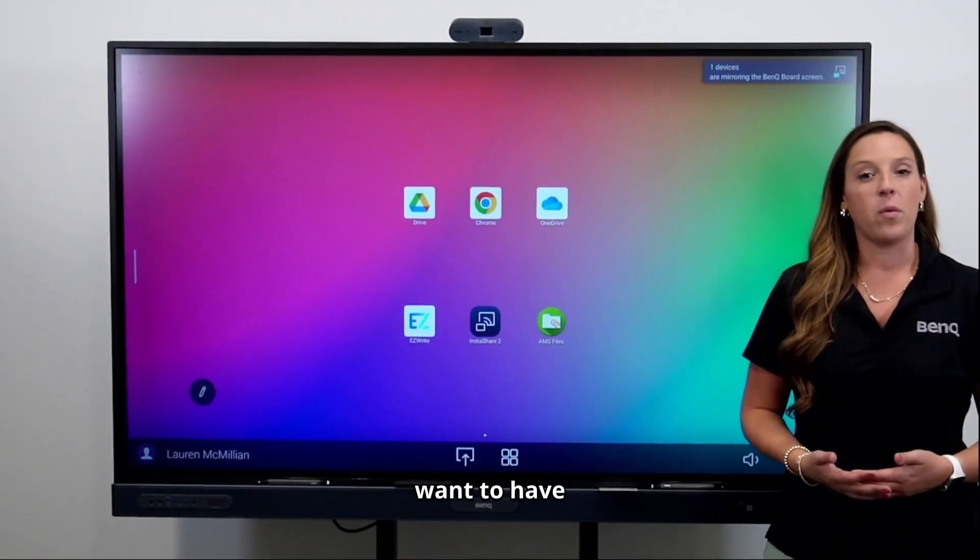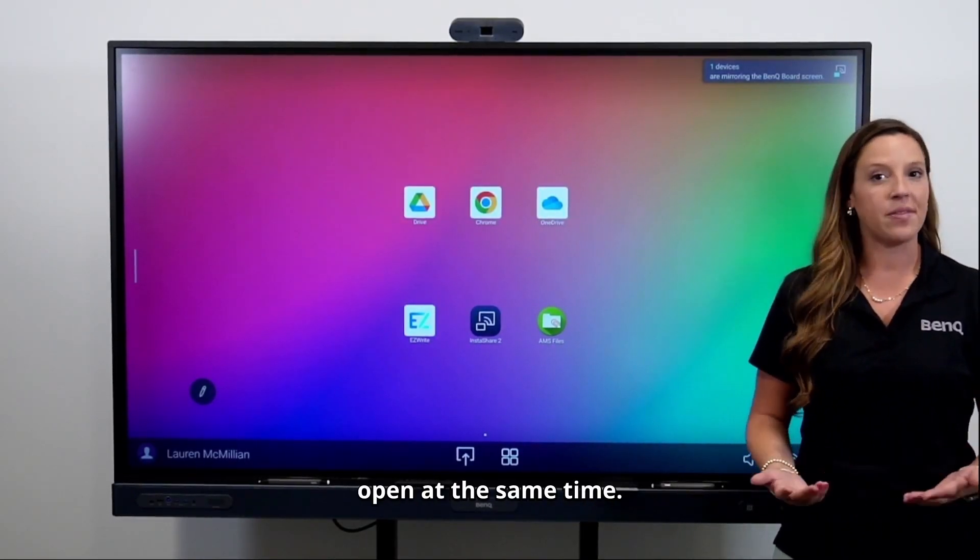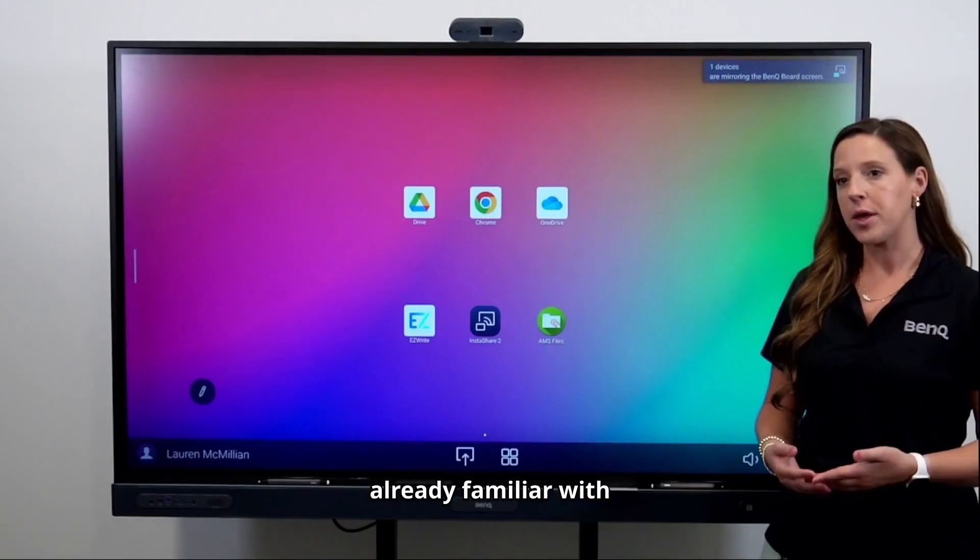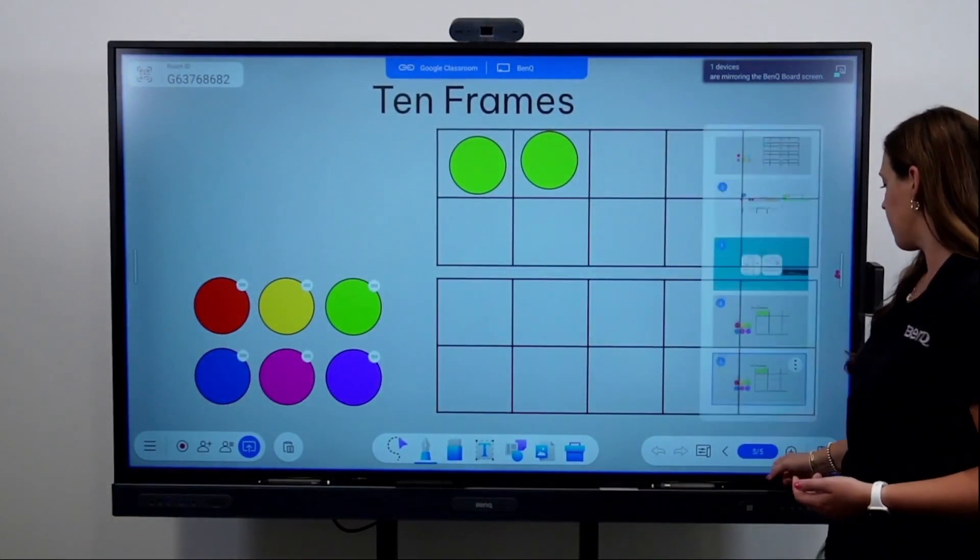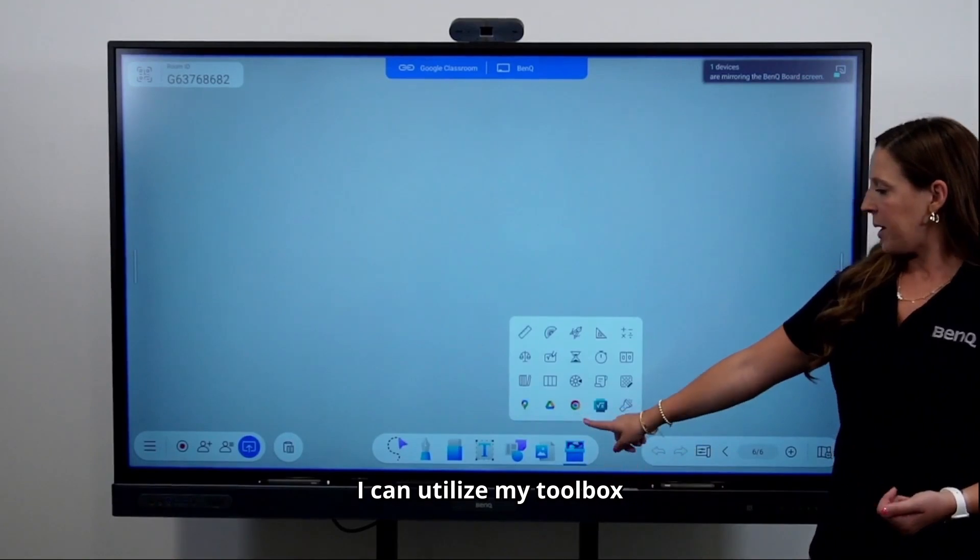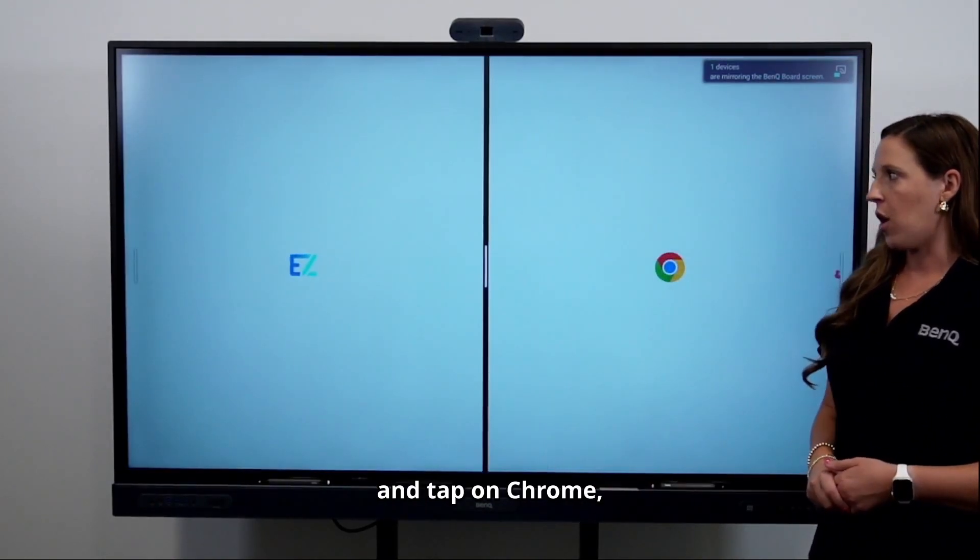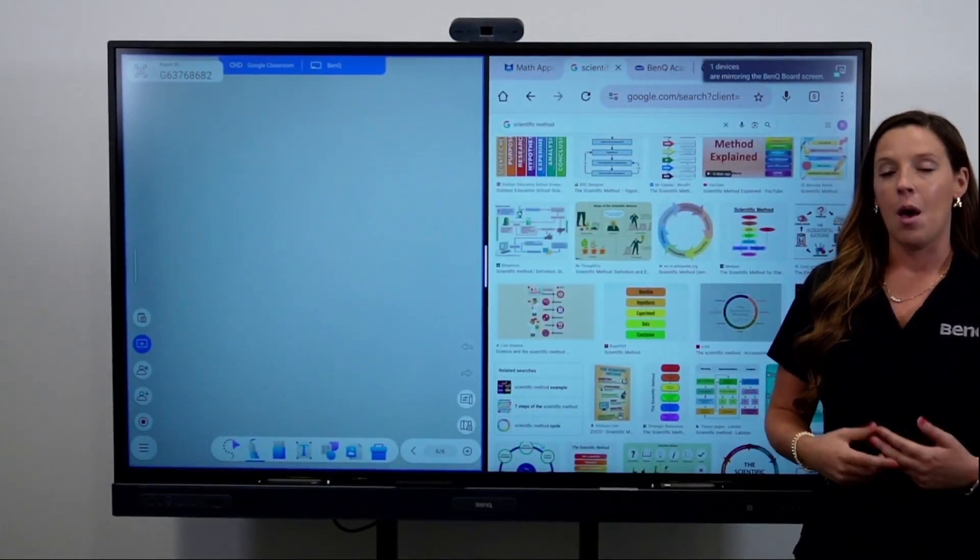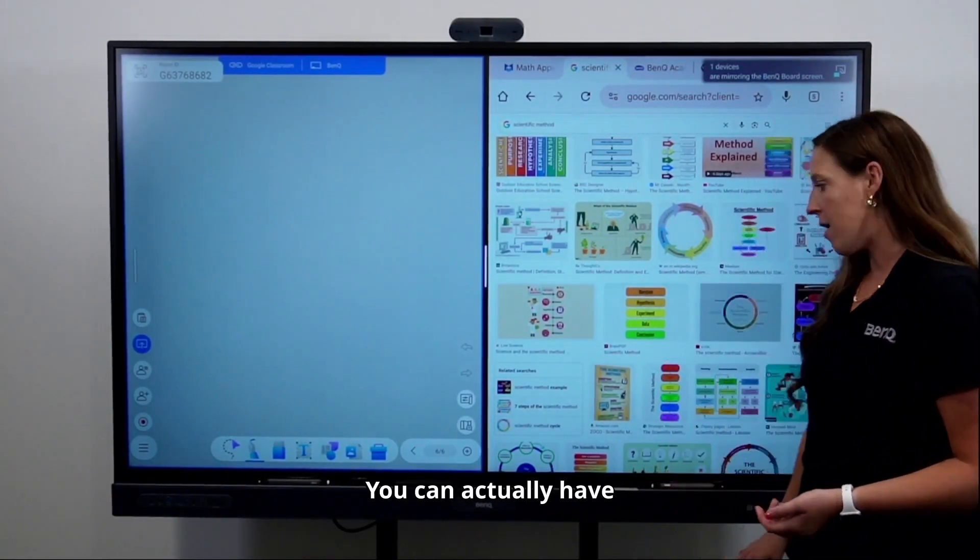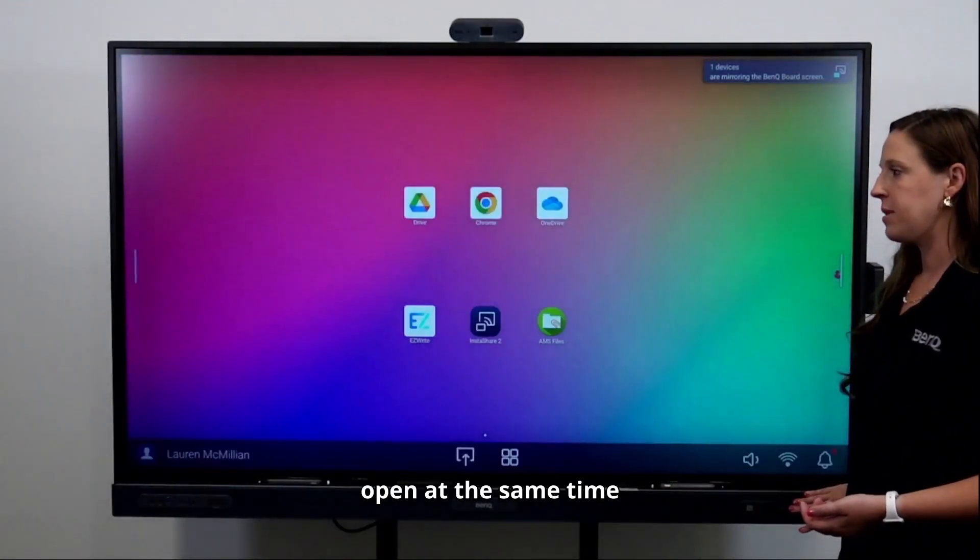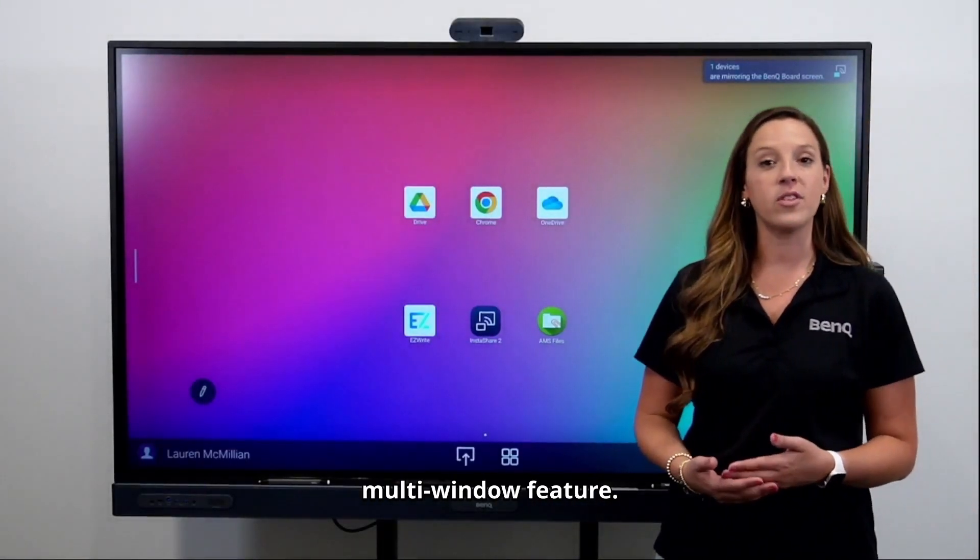Sometimes you might want to have multiple resources and multiple apps open at the same time. One thing you're probably already familiar with is the fact that you can easily split your screen when you're in EasyWrite. I can utilize my toolbox and tap on Chrome and it's going to auto split my screen. But maybe you want to have multiple apps open. You can actually have up to six apps open at the same time by utilizing our multi-window feature.